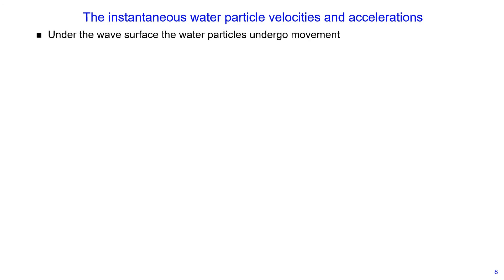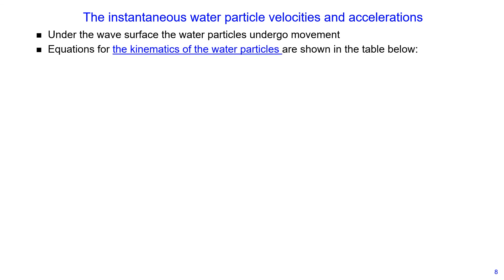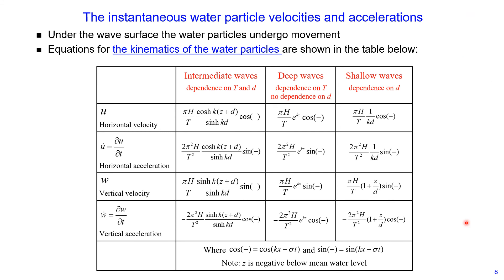Under the wave surface, water particles undergo movements. We can estimate instantaneous water particle velocities and accelerations using kinematics equations, as shown on this slide. These equations cover horizontal velocity, horizontal acceleration, vertical velocity, and vertical acceleration. Depending on your wave conditions — intermediate, deep, or shallow — we have a set of equations to use. These follow from linear wave theory and the velocity potential function. Derivation is reasonably complex, so all equations are summarized in this table; you use equations applicable for your design conditions.